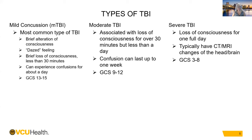Moderate traumatic brain injury is associated with loss of consciousness for over 30 minutes but less than a day. Confusion can last up to a week, and that GCS is usually 9 to 12. Severe TBI typically involves loss of consciousness for one full day or more, changes of the brain or head on CT or MRI, and a GCS of 3 through 8. A GCS of 8 or below indicates a coma.